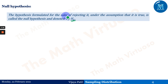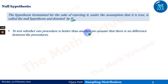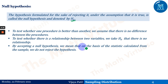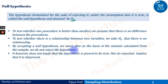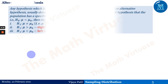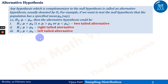In the case of a single statistic, H₀ states that the sample statistic does not differ significantly from the hypothetical parameter value. In the case of two statistics, H₀ states that the sample statistics do not differ significantly. To test whether one procedure is better than another, we assume there is no difference between the procedures. To test whether there is a relationship between two variables, we take H₀ as no relationship. Accepting the null hypothesis means that on the basis of the calculated statistic we do not reject it — though this does not imply it is proved true, nor does rejection imply it is disproved.